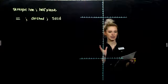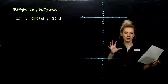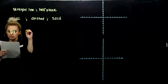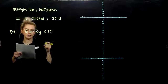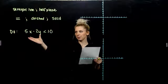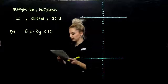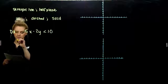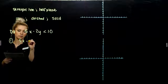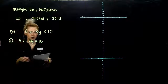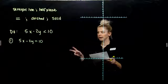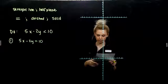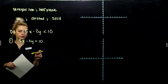We've seen cases where the inequality already has y isolated, but now we'll see cases where it might be in standard form, like this first example. The inequality doesn't tell us right away where the y-intercept is or what the slope is to start graphing the boundary line. So first, we need to make it an equality. We can either plug in x and y as zero to find intercepts, or we can solve for y. I personally like to have it in slope-intercept form, and it's good practice.